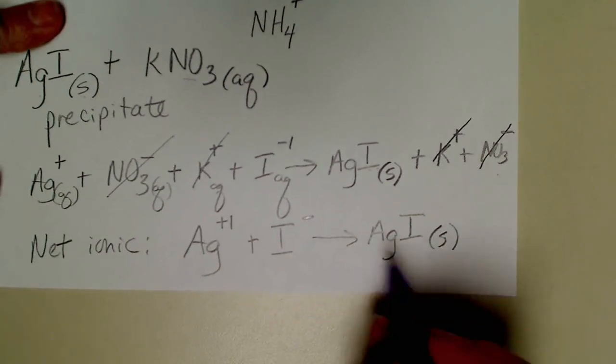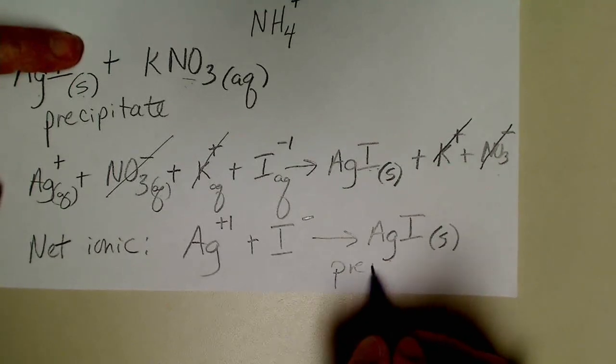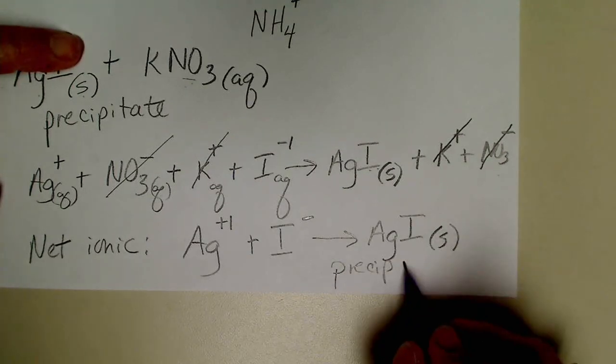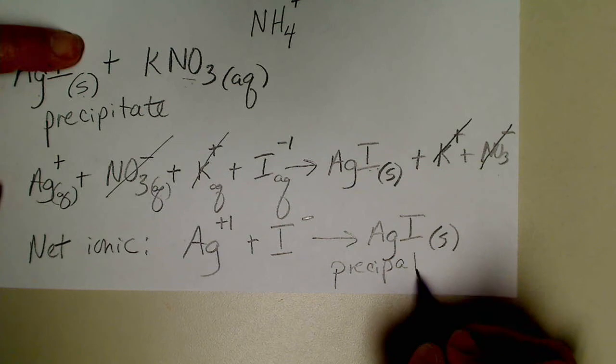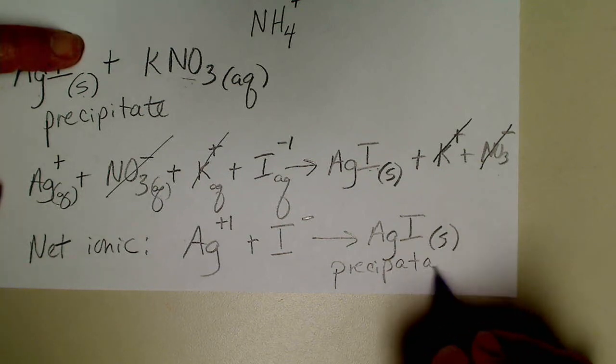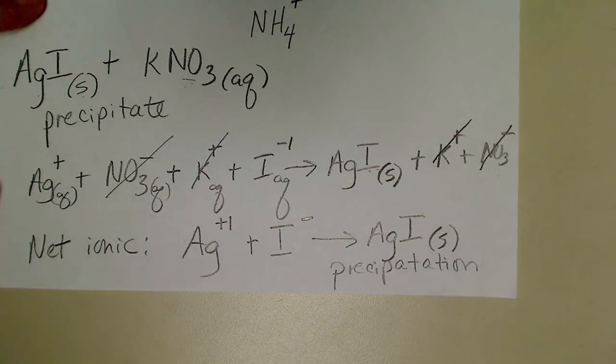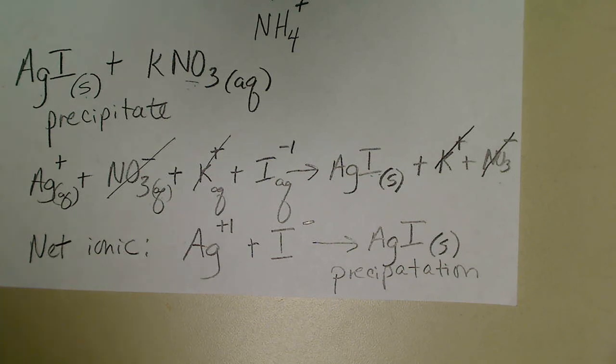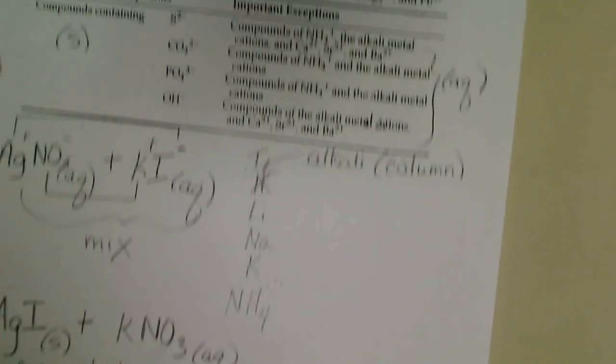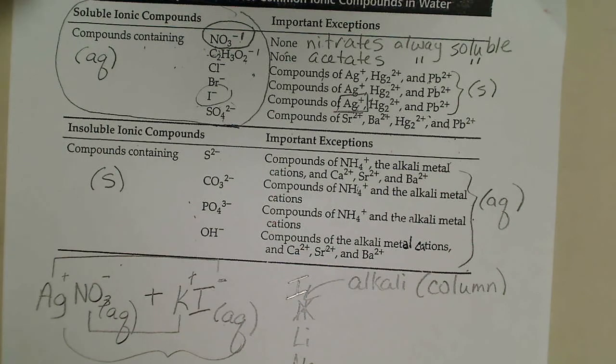So a precipitation reaction is really a good way to get an unwanted metal out of drinking water. I've got another sheet that we're going to look at in just a minute, and we're going to use the solubility guidelines to predict whether or not a formula will be soluble or insoluble.